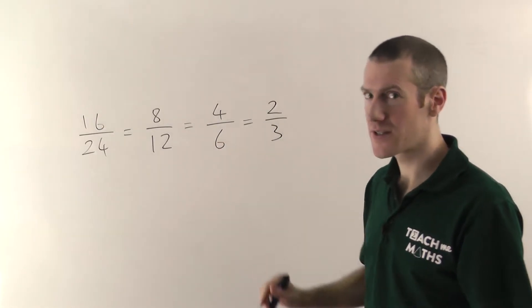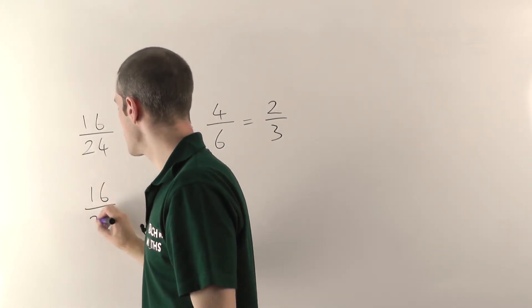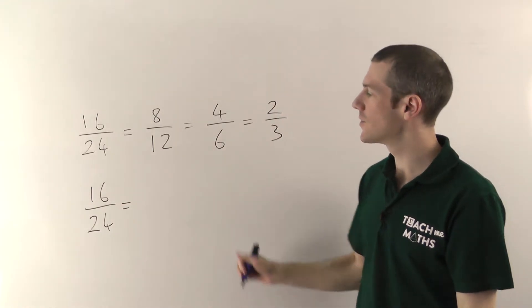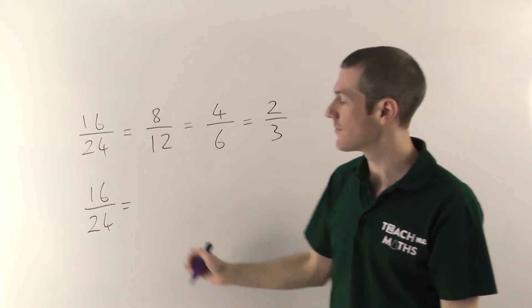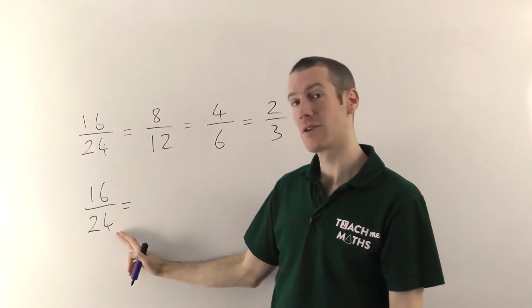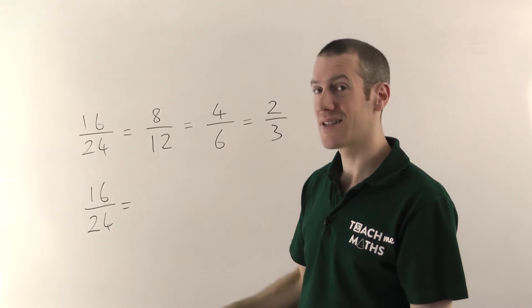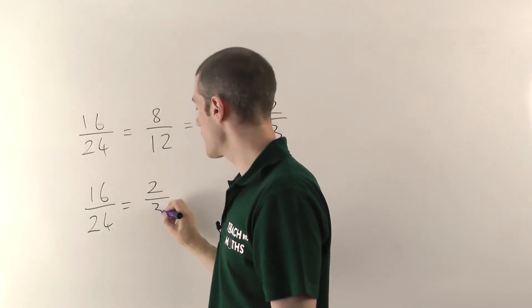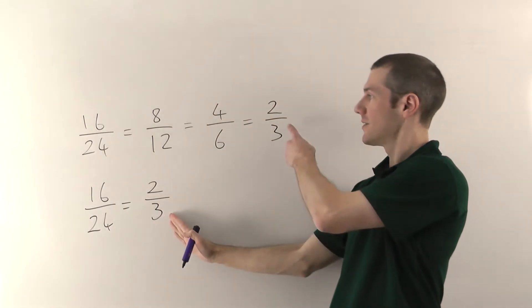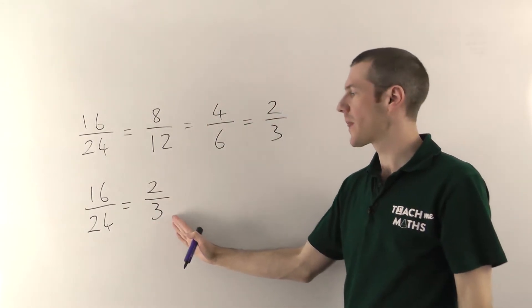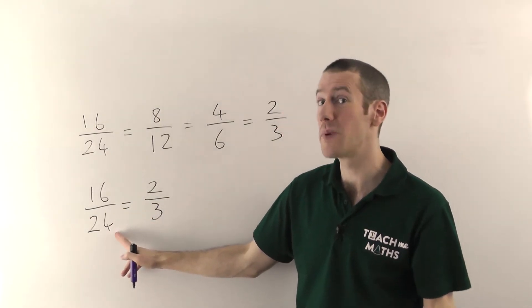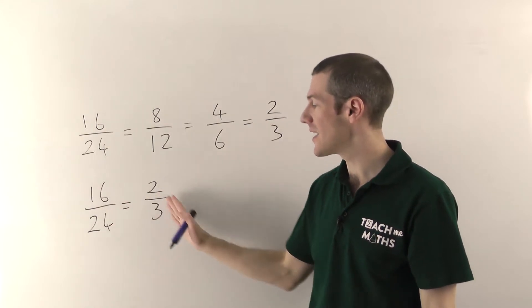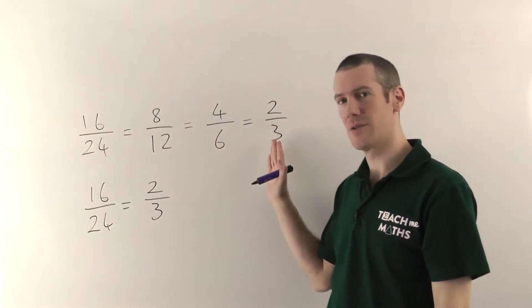However, if I just go back to the beginning again, when we have 16 over 24, if you divide by a bigger number, then you can cut out some of the work in the middle. So for example, 8 goes into both of these numbers. So 8s into 16 will go twice. And 8s into 24 go three times. And look, we've jumped straight to the simplified answer. If you can divide the top and bottom of any fraction by the biggest number you can, in this case 8 is the biggest number that goes into 16 and 24, that will always get you straight to the answer. And you don't need to do all this work.